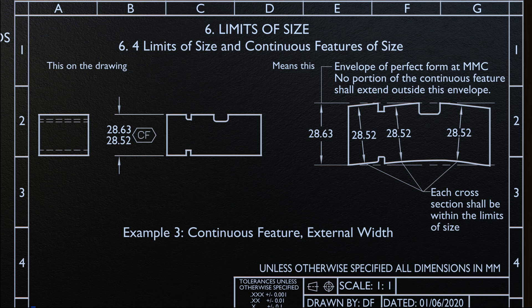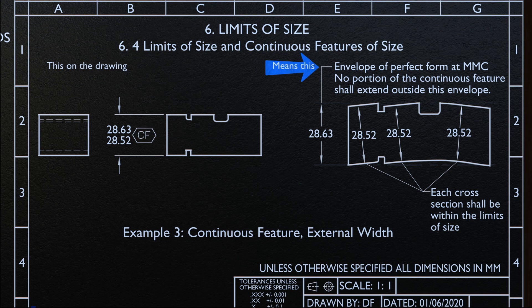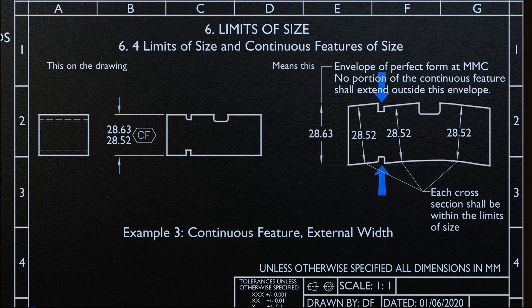Taking a look at the third example, for continuous features with the external width feature. You will find this feature in the drawing as illustrated on the left side of the screen. This feature is interpreted as illustrated on the right side of the screen. To accept this part, each cross-section shall be within the limit of size, which means no portion of the continuous feature shall extend outside this envelope of perfect form at MMC.